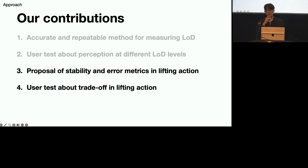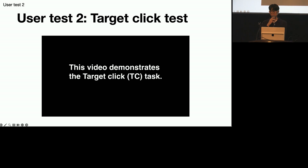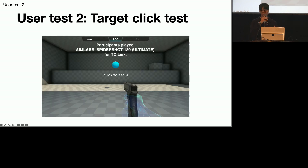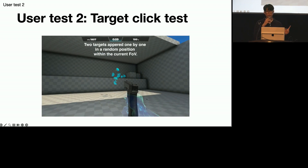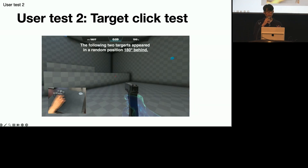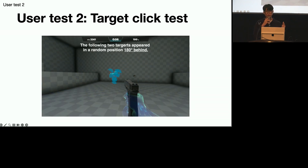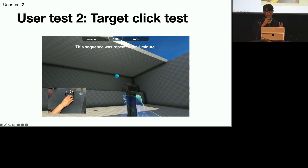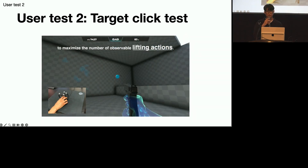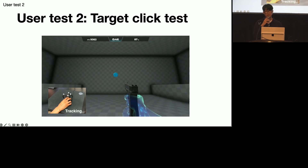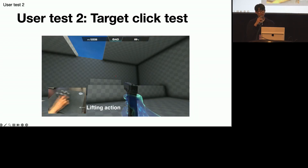In the second user test, we performed a target click test for quantitative error measurement. Participants played Aim Lab's SpiderShot 180 game. Two targets appear one by one in a random position within the current field of view, and the following two targets appear in a random position 180 degrees behind. This sequence was repeated for one minute, forcing participants to rotate their field of view 180 degrees to maximize the number of observable lifting actions.